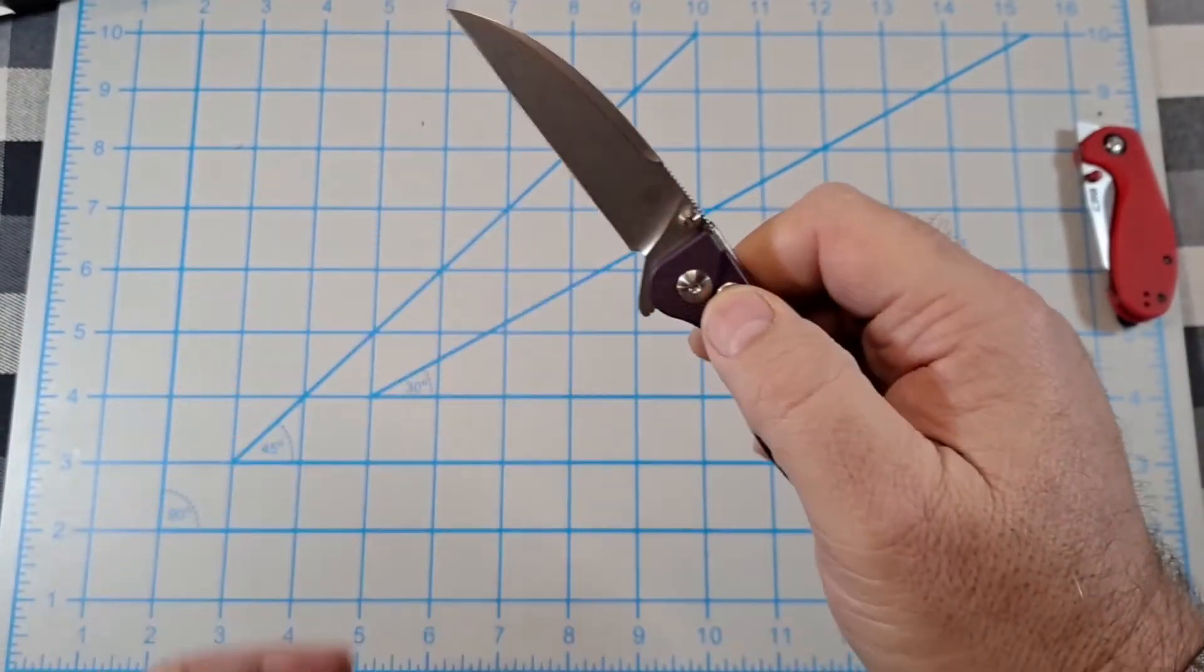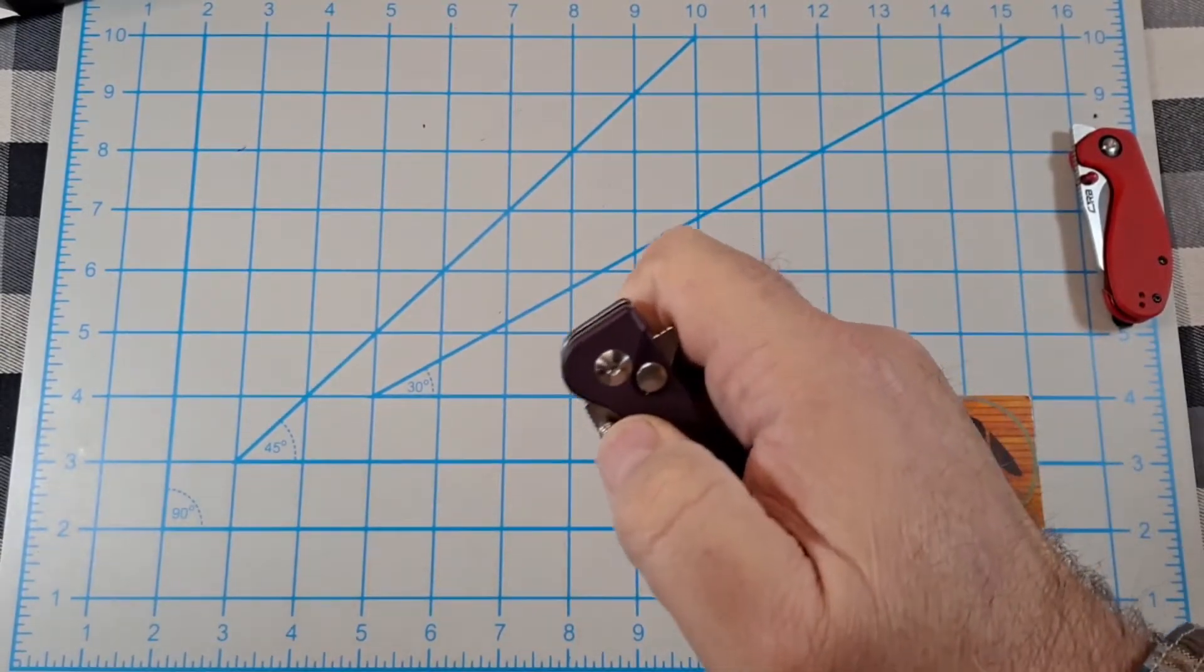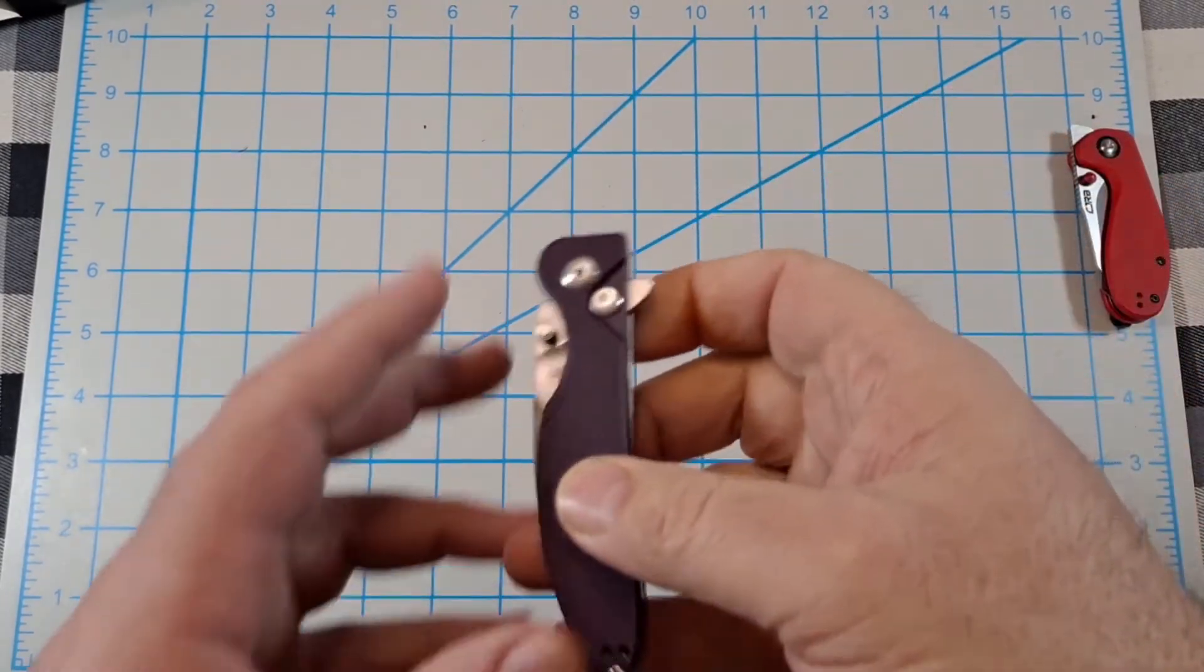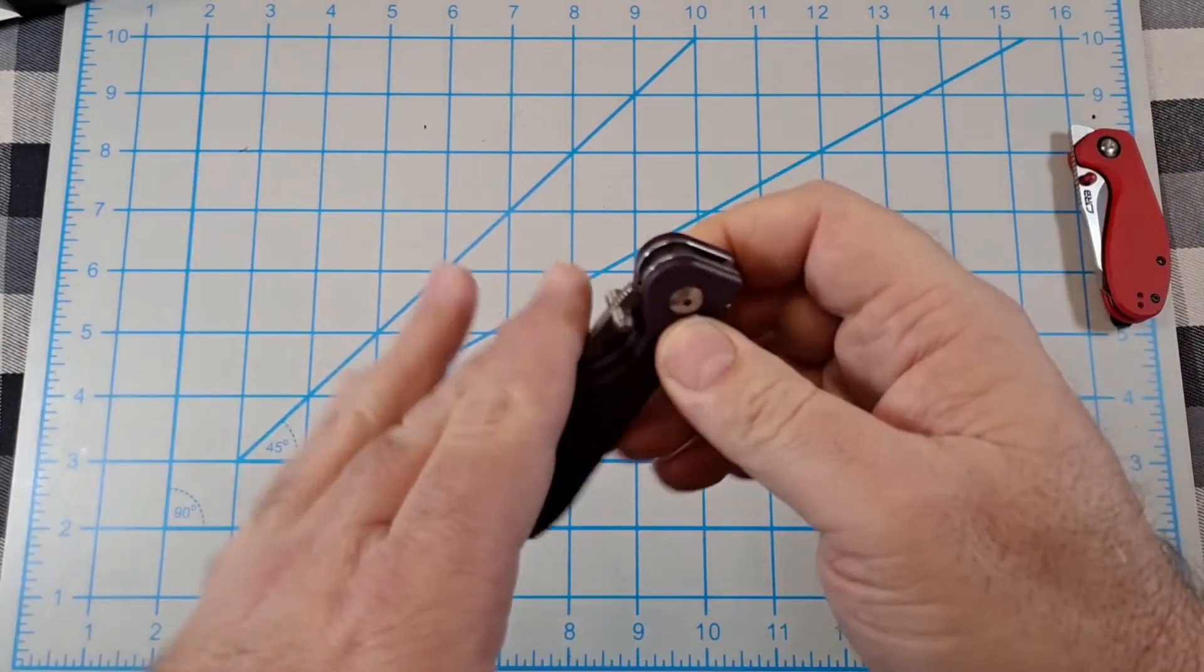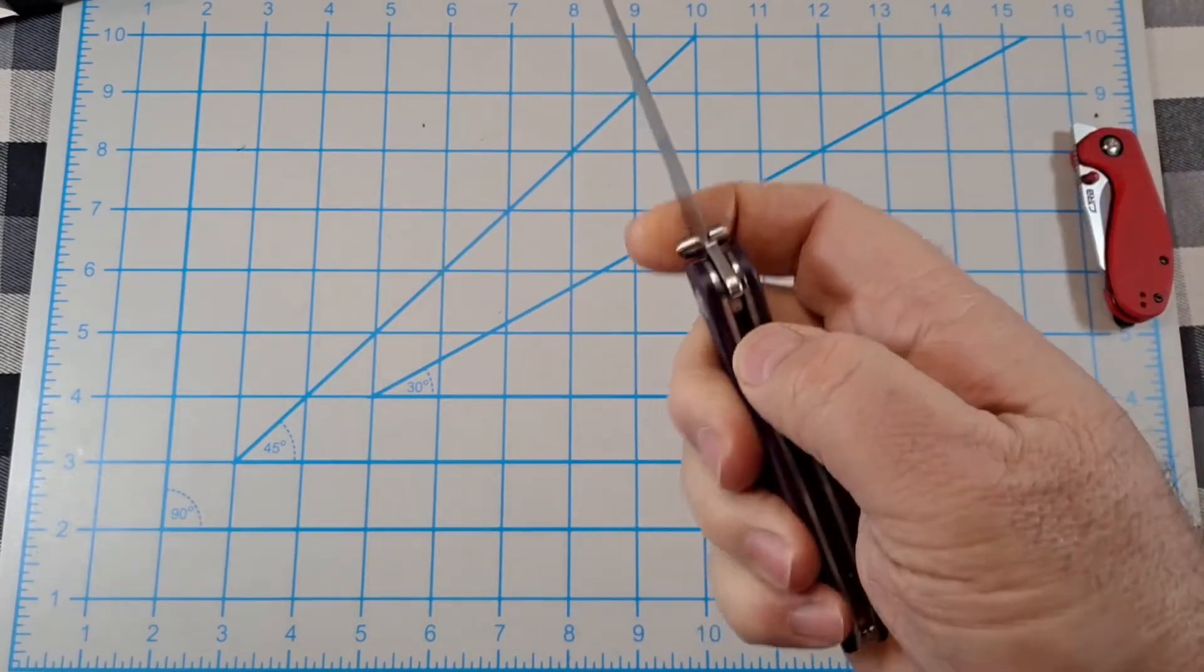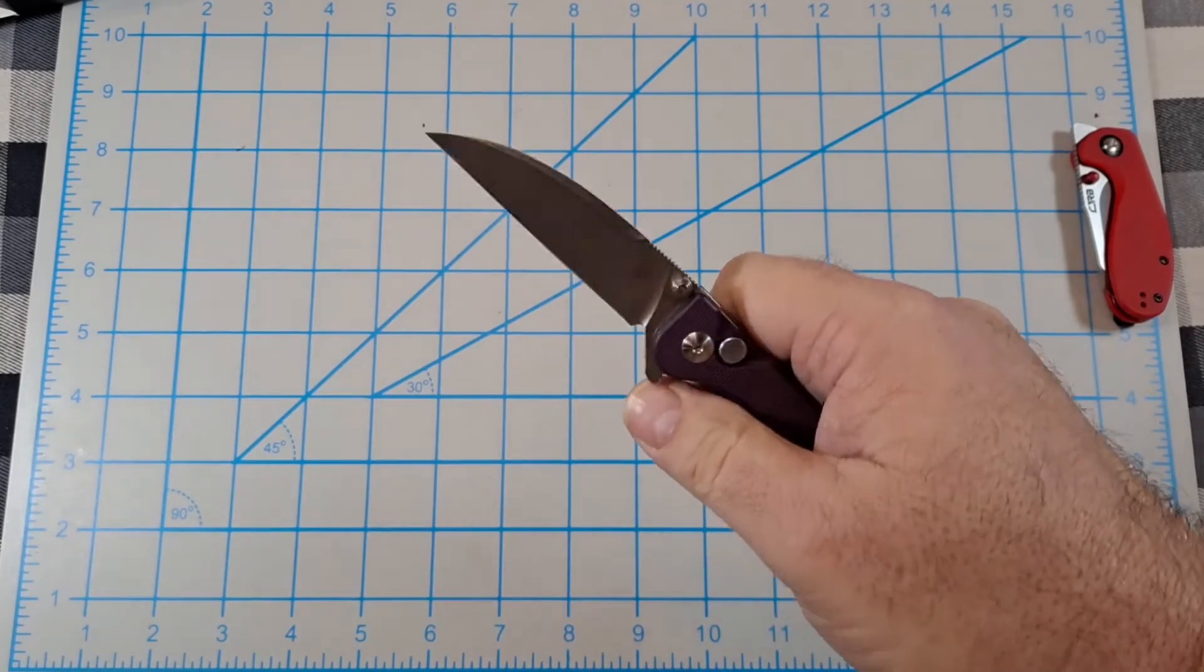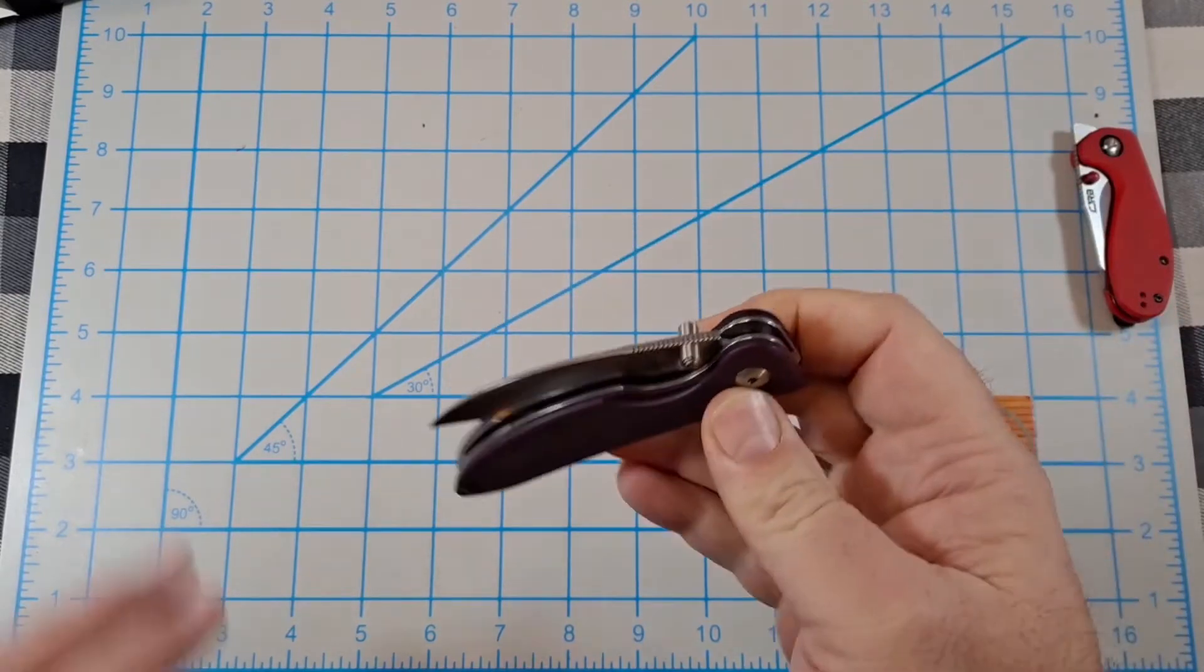You notice it is a button lock plus it has thumb studs. The action is good. I keep trying to do a liner lock. There we go. The action is pretty good. Man, I did it again. This is gonna take forever to get used to.